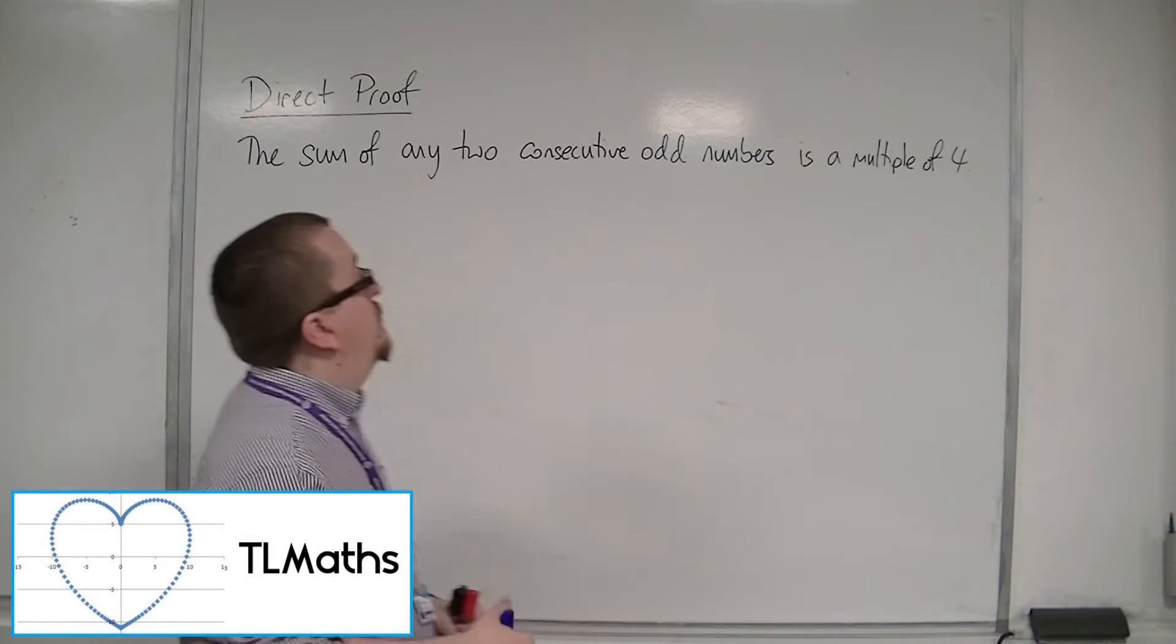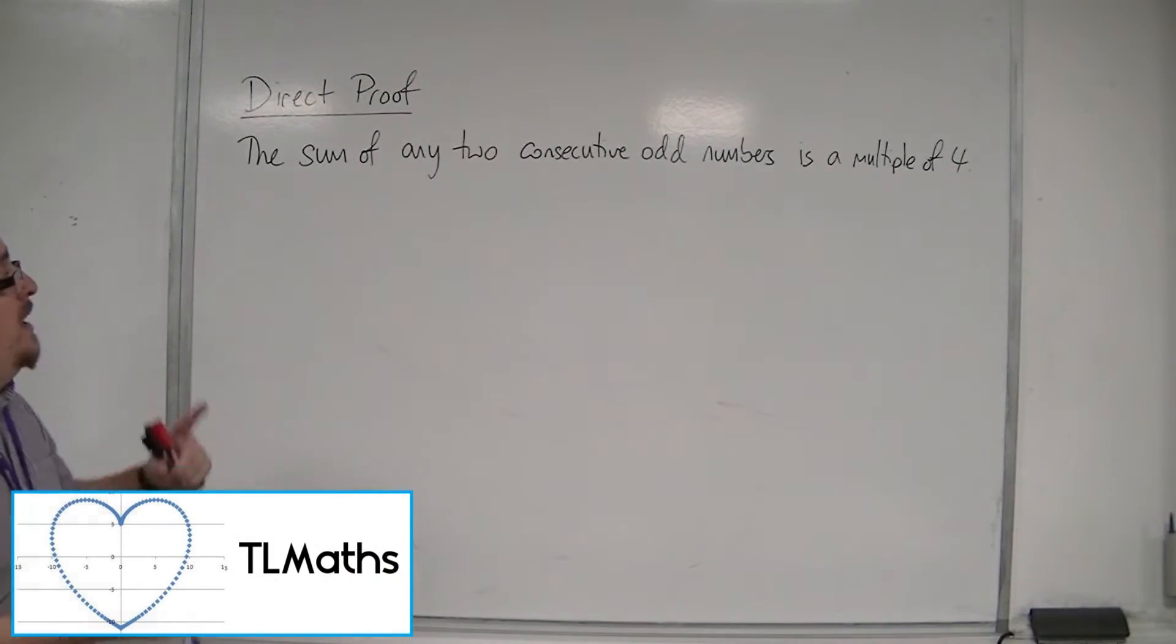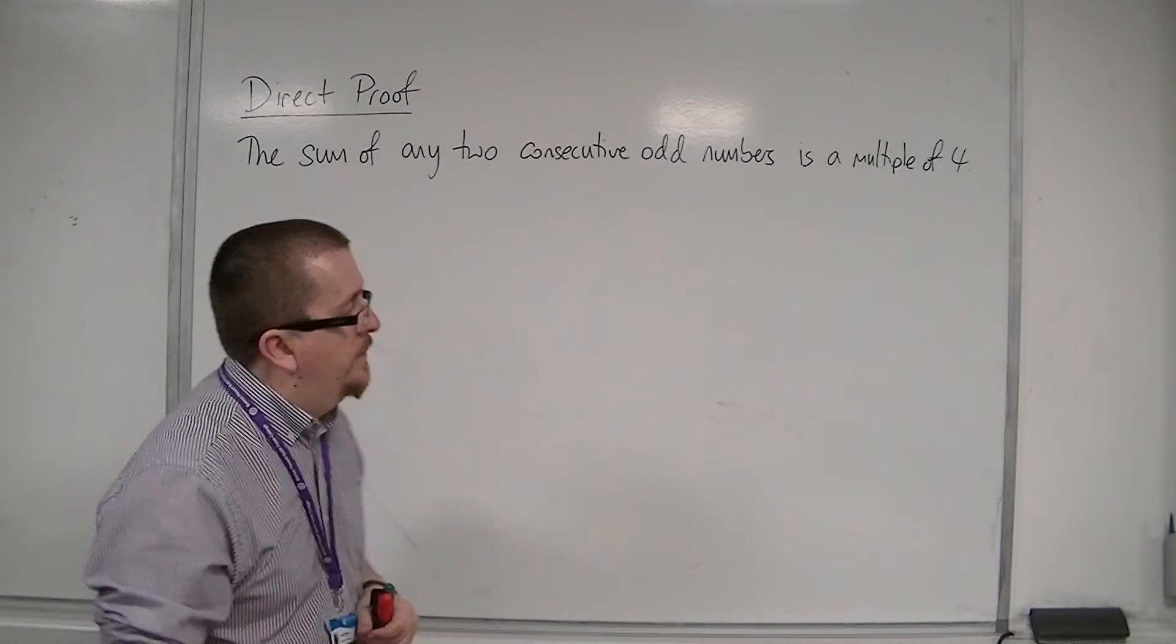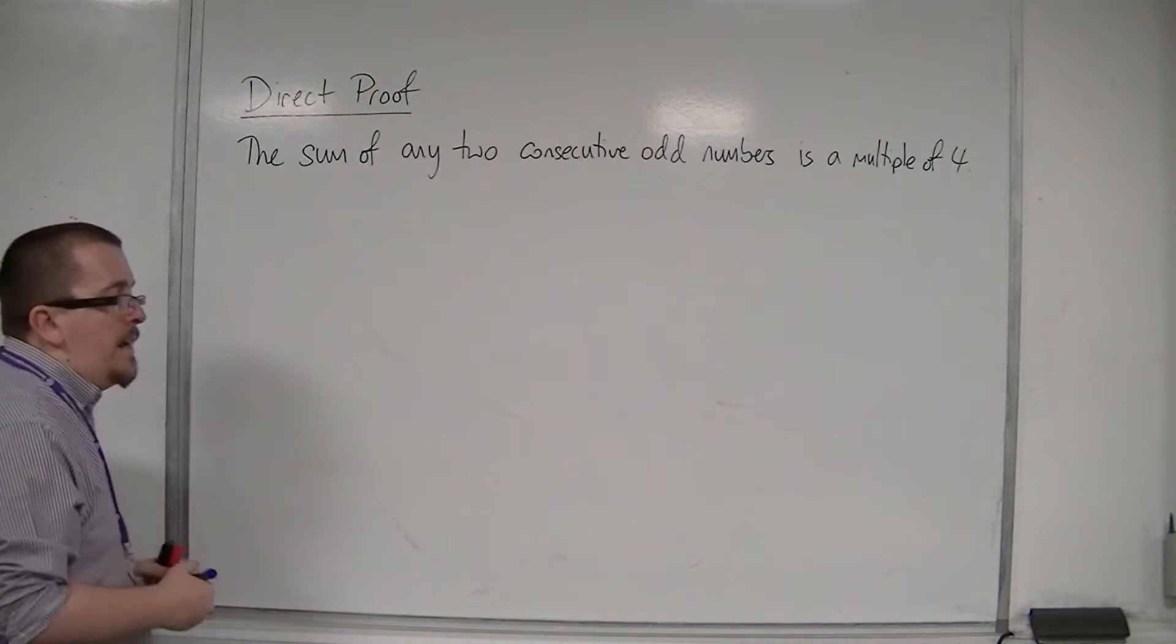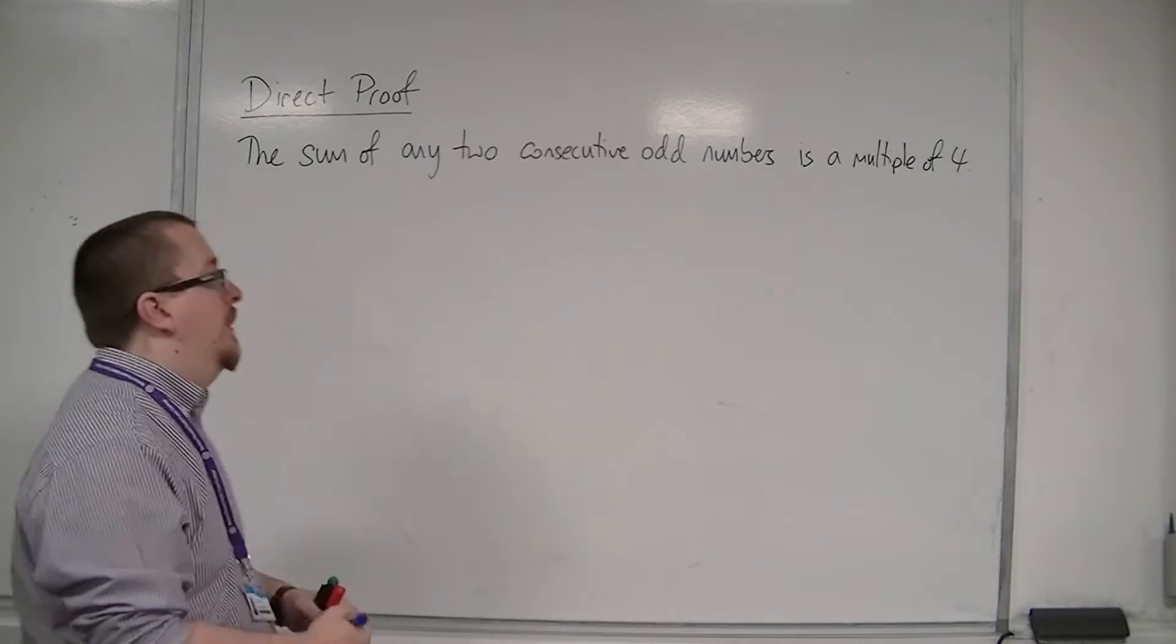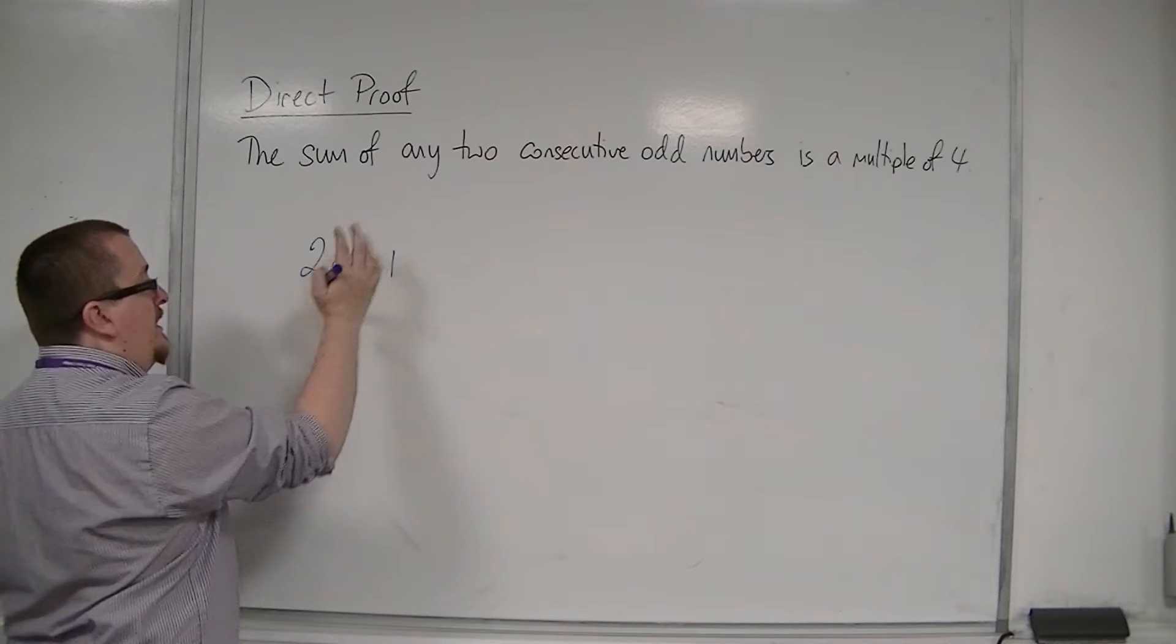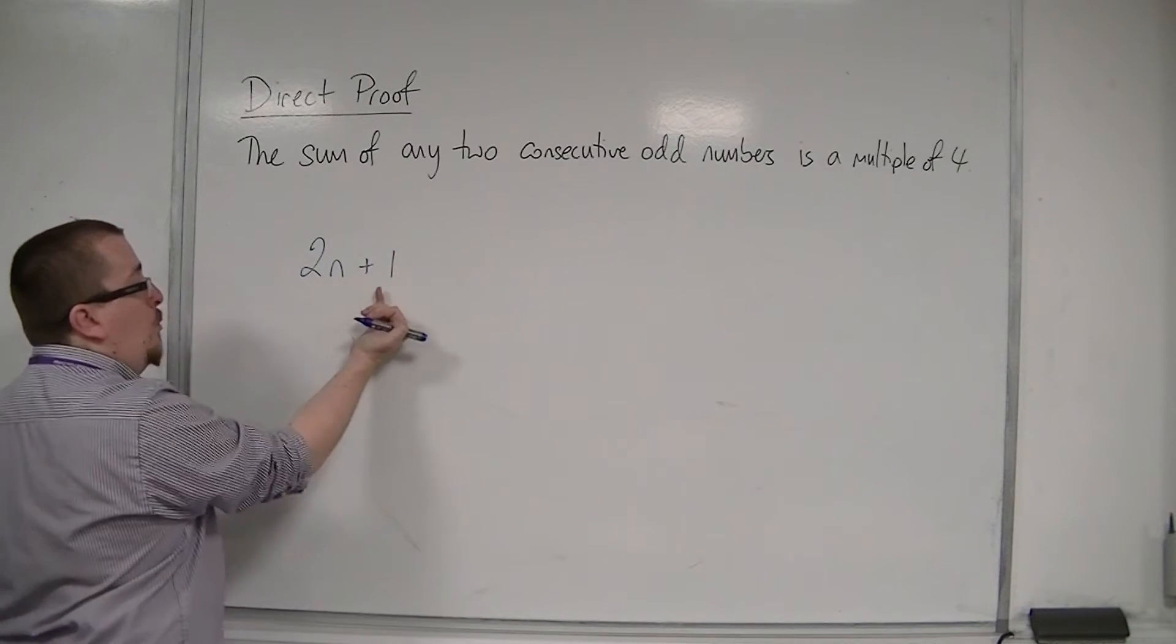Let's say we wanted to prove that the sum of any two consecutive odd numbers is a multiple of 4. We could write down two consecutive odd numbers as 2n plus 1. So that is an even number, and so adding 1 will make it odd.